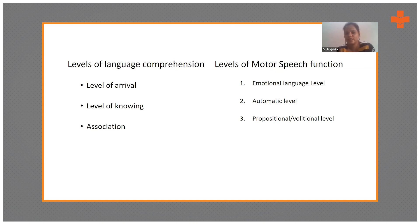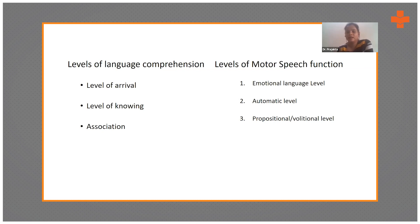There are three levels of motor speech function. First is the emotional language level — this is what we find even in very drowsy patients; for example, an immediate response like 'ouch' to a painful stimulus, or wincing, or any spontaneous exclamation. Second is the automatic level. Third is the propositional or volitional level.